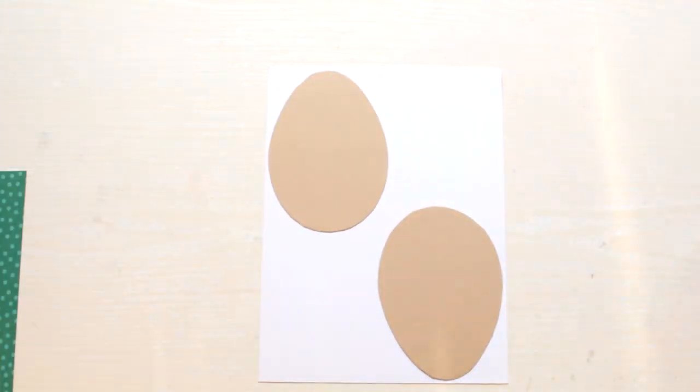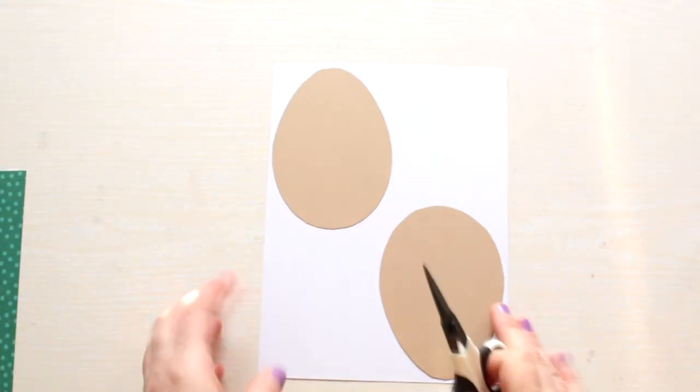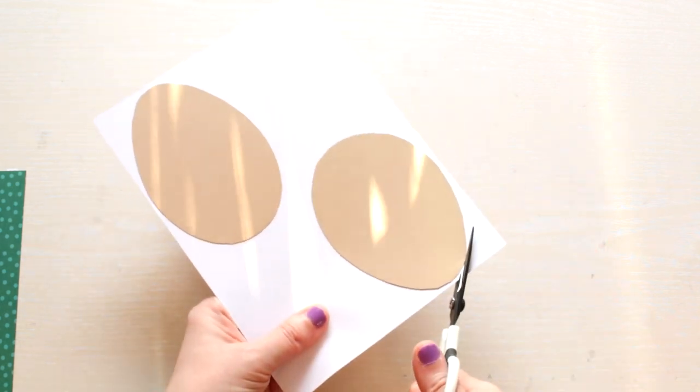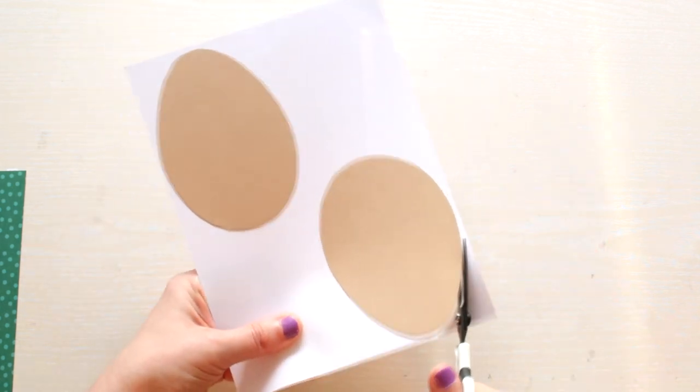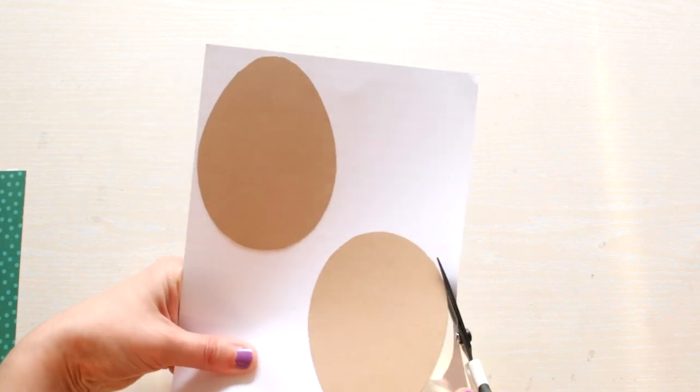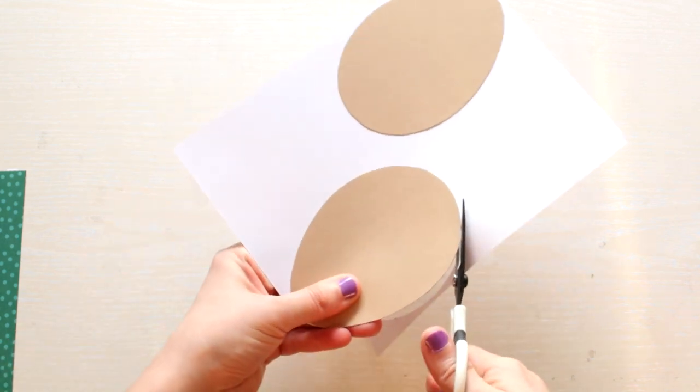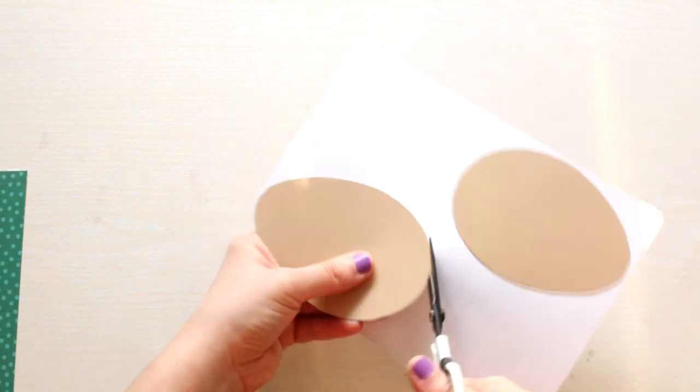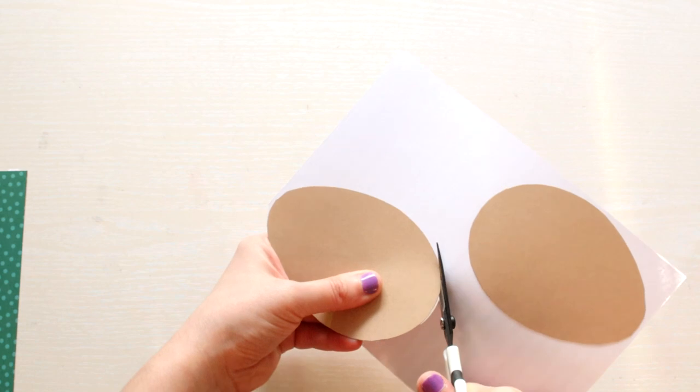Now that the templates are fixed onto the reverse of the patterned paper, you need to take your scissors and cut them out. Layering the paper onto the plain cardstock makes it more sturdy.